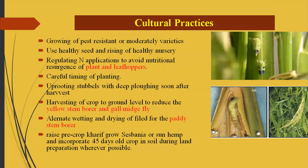The next IPM practice is cultural practices. Shown here are pictures of a leaf hopper — a sucking pest — and stem borer damage. The first cultural practice is growing pest-resistant or moderately resistant varieties. Using resistant varieties can reduce further infestation. If farmers grow susceptible varieties, much higher pest incidence occurs. Therefore, resistant varieties are generally recommended.